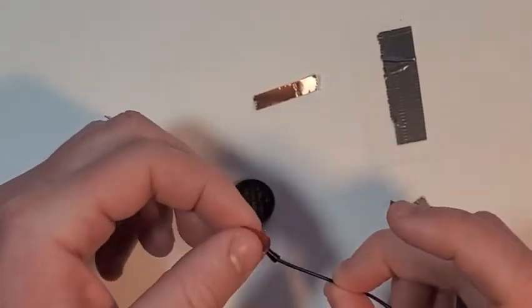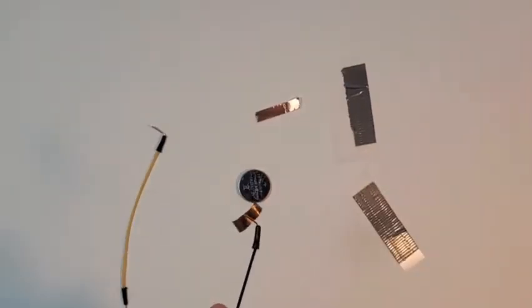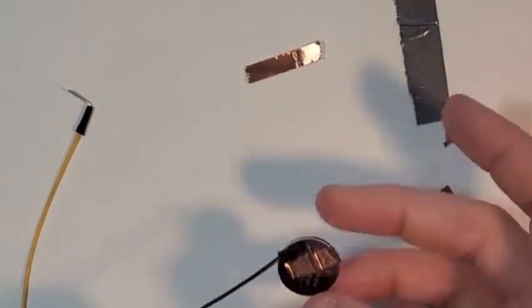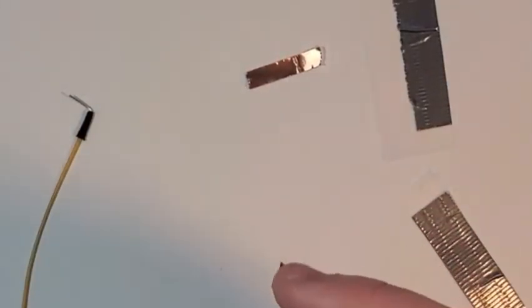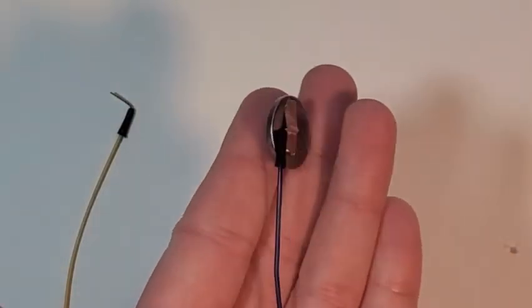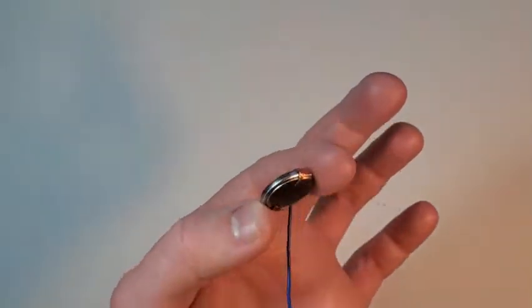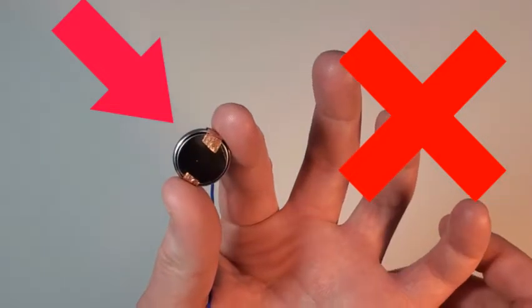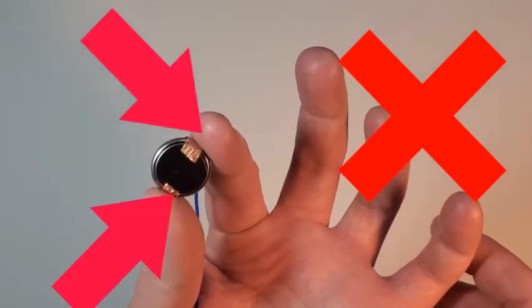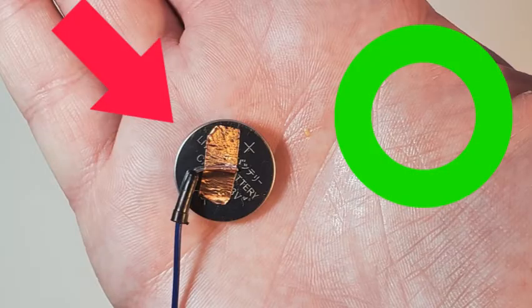Now take your wire end, the metal part, and use the copper tape to tape your wire to the side of the battery. It should look like this. Now take note, it should not look like this. Notice how the copper tape goes all the way around to the other side of the battery. It should stay on one side of the battery, as shown here.